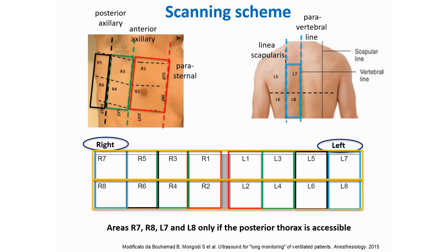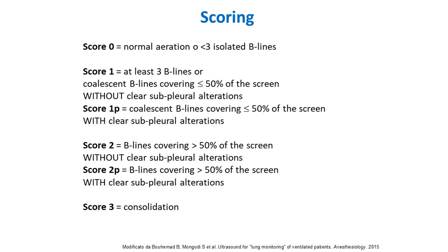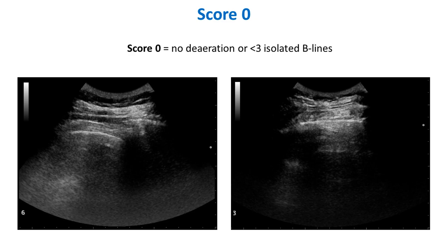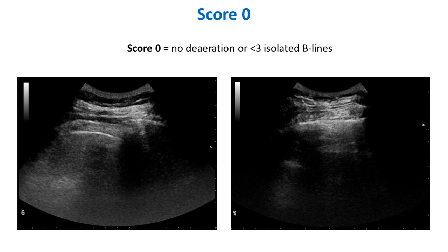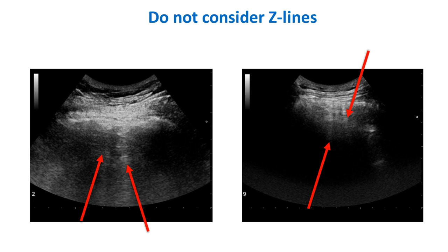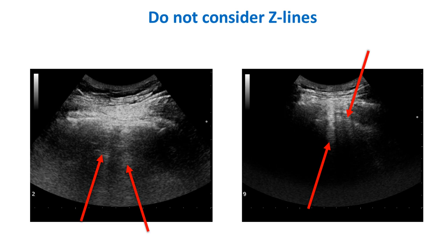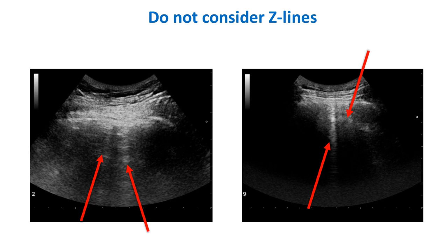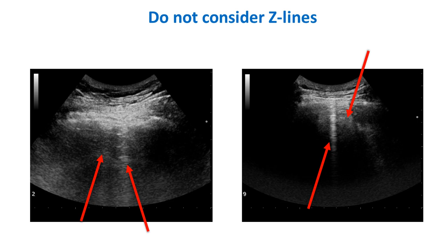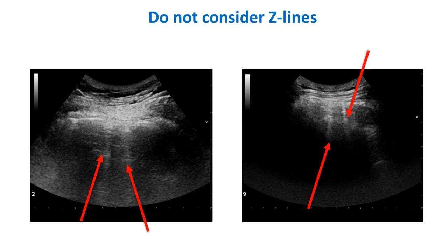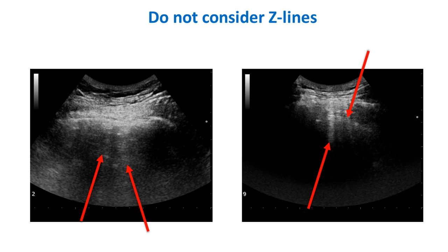Using a standardized scanning scheme is also useful because it allows some kind of scoring. We use a previously validated score, assigning a score of 0 when we have no B lines or fewer than 3 B lines. We have to be careful not to mistake Z lines for B lines. Z lines are also hyperechoic vertical artefacts but without any specific pathological meaning. Compared to B lines, Z lines are less defined, more blurred, do not clearly move with respiration, and do not clearly start from the pleural line.